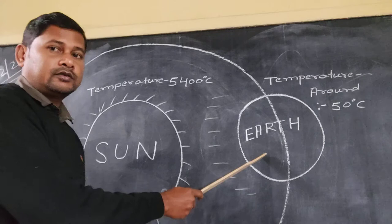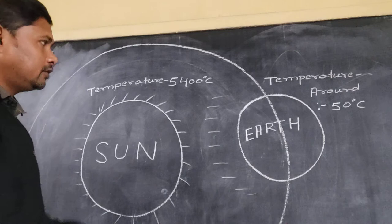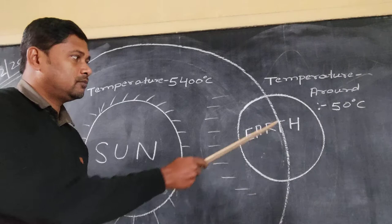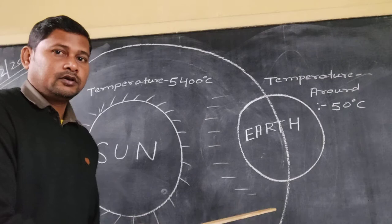And the Earth takes around 365 days to make one revolution around the sun. Means what? The movement of the Earth around the sun is known as revolution.